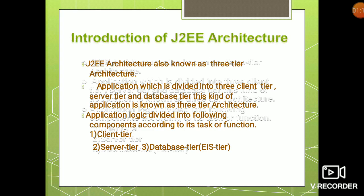Application logic is the main logic of any application or system. An application divided into client tier, server tier, and database tier is known as three-tier architecture. For example, if you consider YouTube, the main logic of YouTube is to display videos to the user according to their demands.